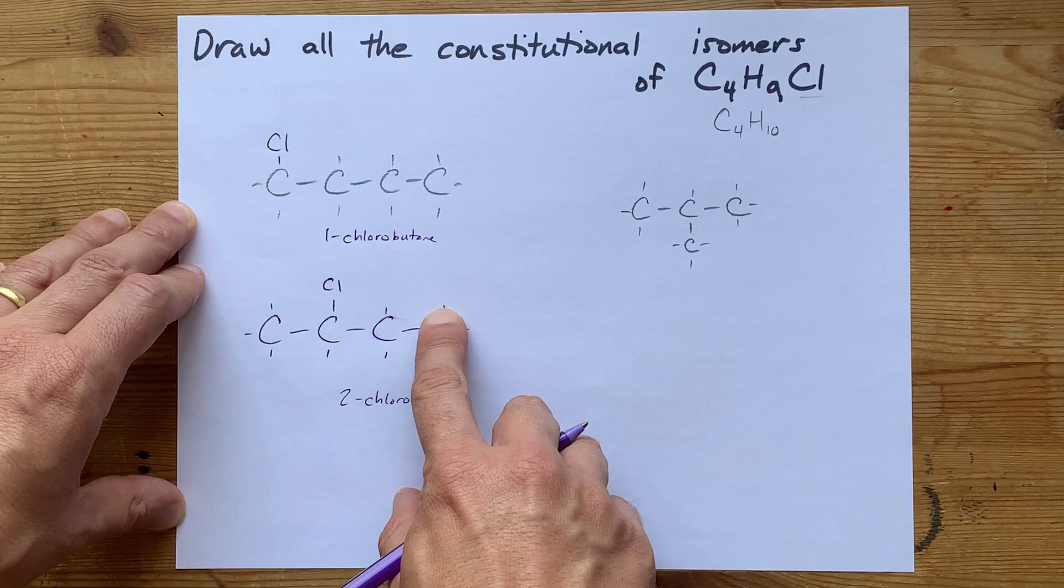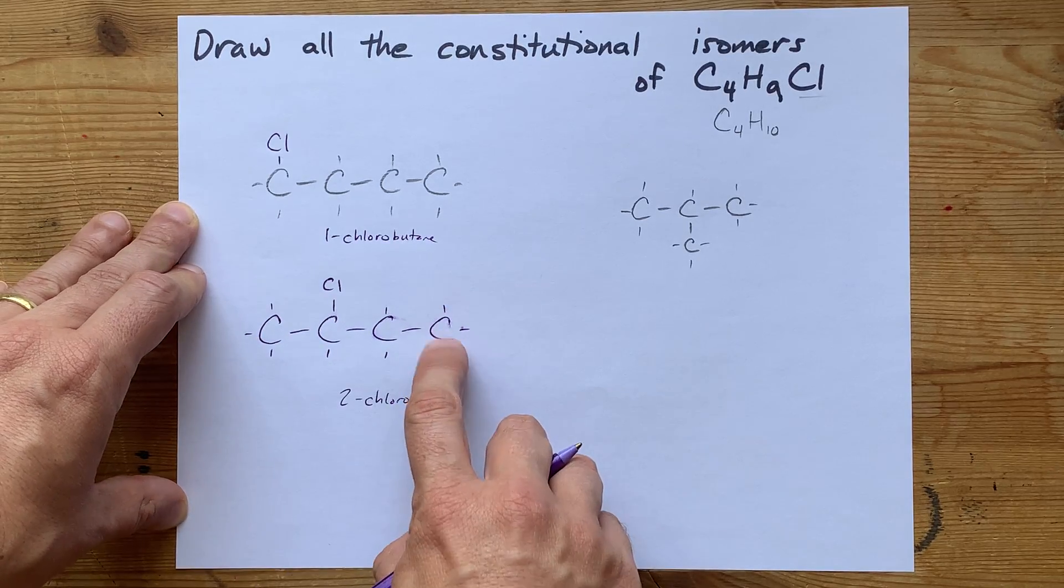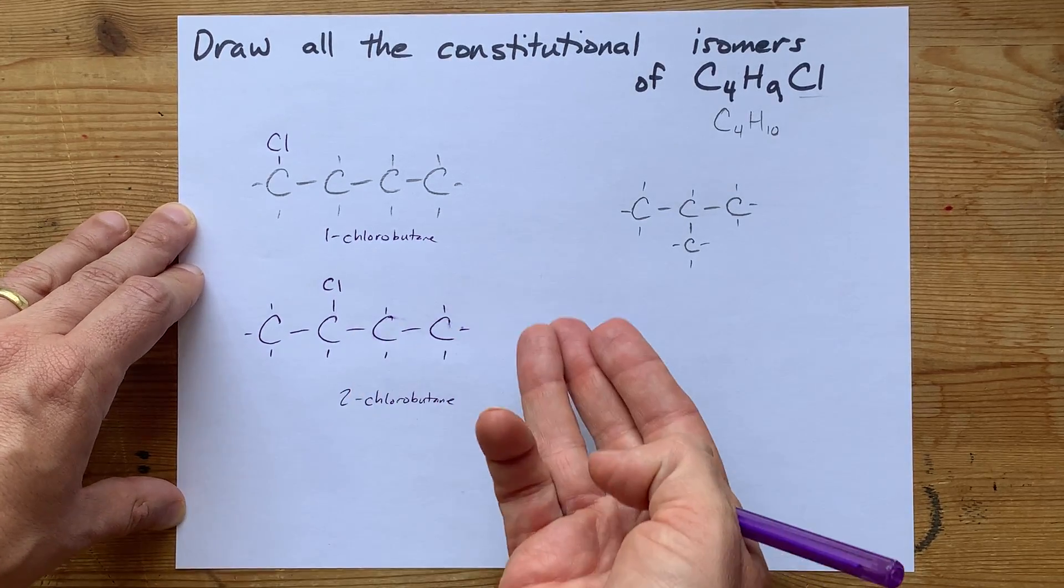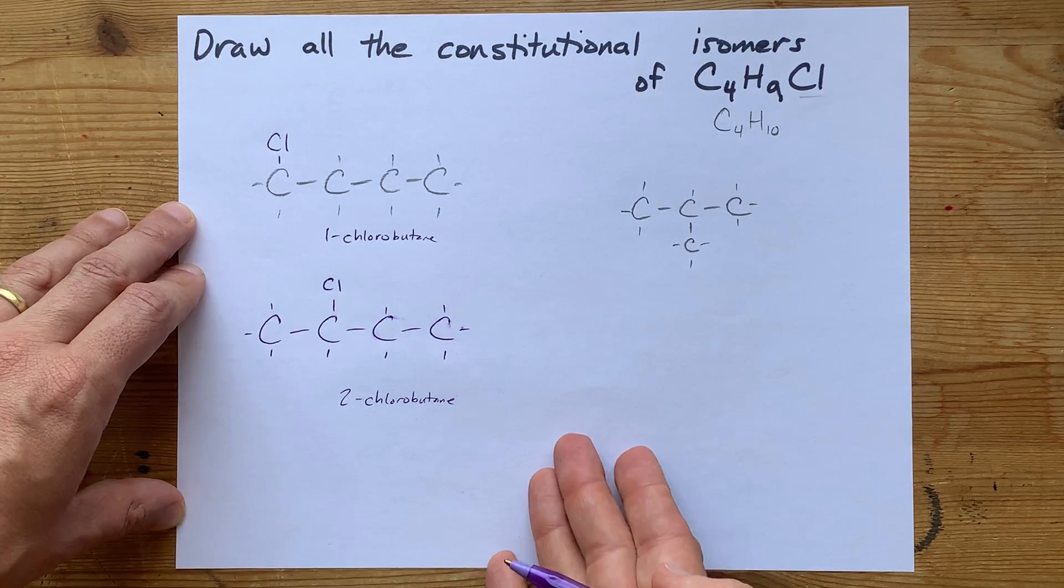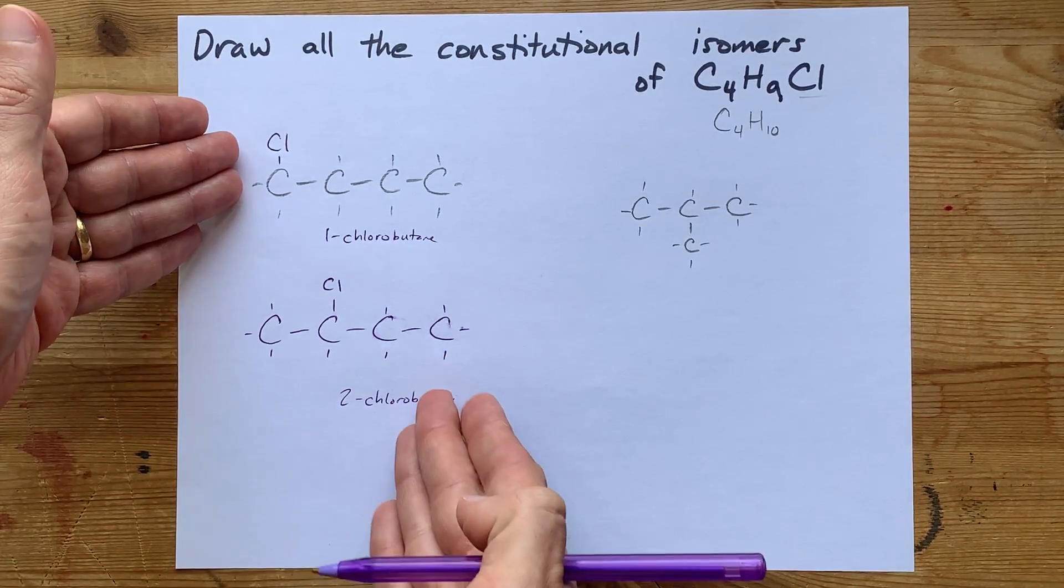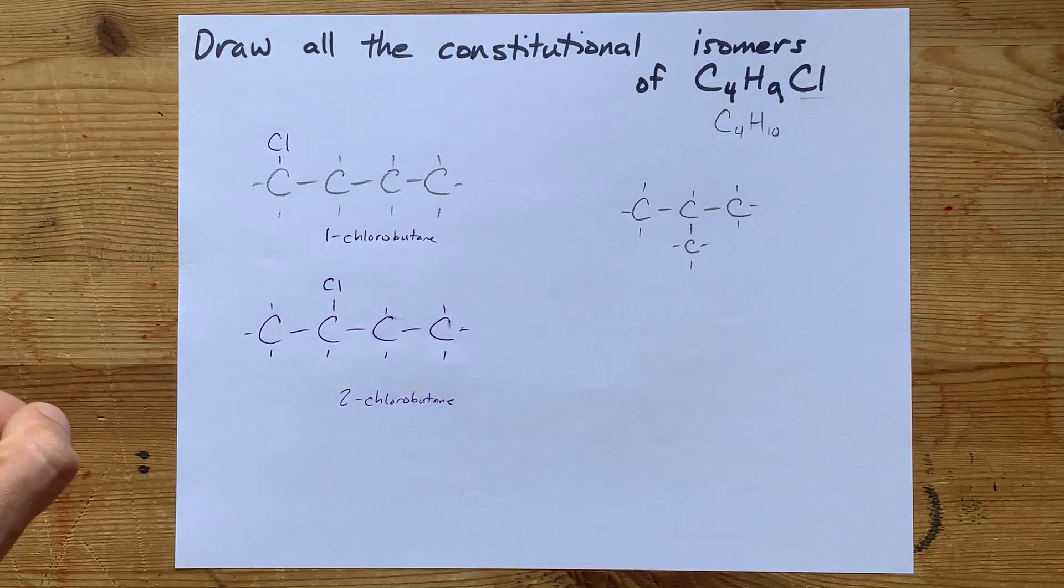And if I put my Cl here on the fourth carbon of the chain, why wouldn't you just call that carbon 1? It's 1-chlorobutane again, right? These are the only two constitutional isomers that have all four carbons in a row.